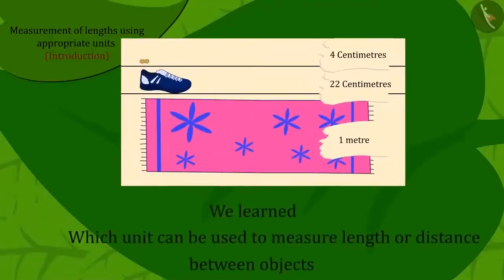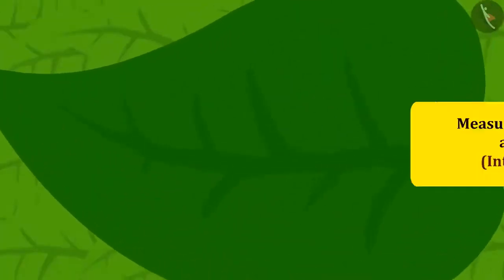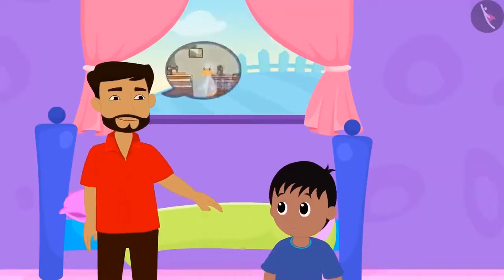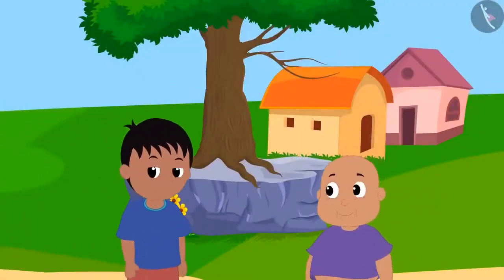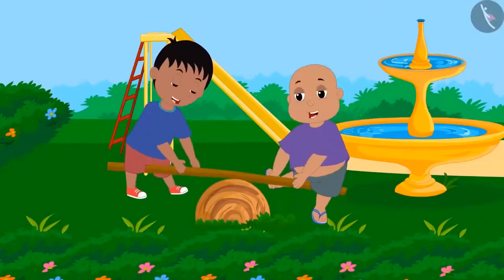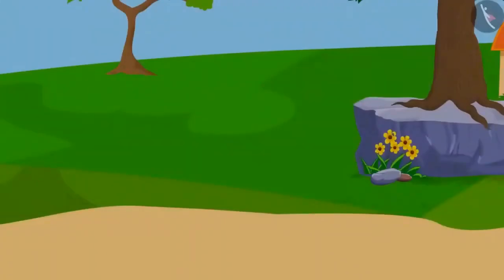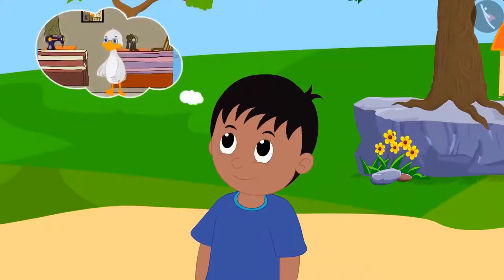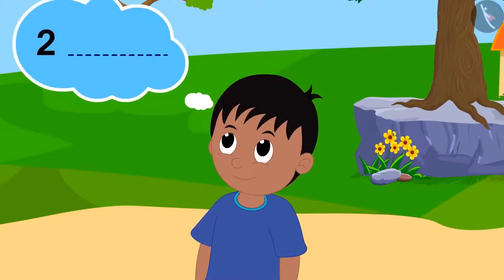In the previous video we learned to use the appropriate unit to measure the length or distance between objects. In this video we will learn more about it with some interesting examples. Raju's father asks him to bring a piece of cloth for his shirt from the shop. On the way, Raju met Bablu and they went to the park to play. Raju totally forgot about bringing the cloth for his father's shirt. When returning home, he remembered he had to go to the shop but only remembered the number two from the measurements his father had given him.